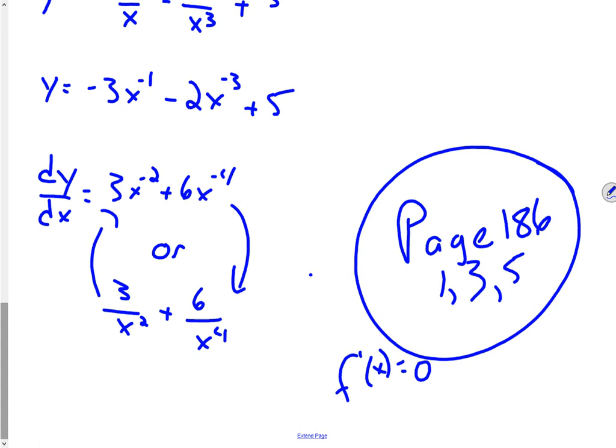On page 186, do number 1, 3, and 5. Number 5 is a great question — it says: find the coordinates of the points, if any, at which the tangent line is horizontal. Remember, if you have a horizontal line, the slope equals zero. So you take the derivative, set f prime equal to zero, and solve for the zeros. We're going to spend a lot of time on derivatives. You'll get another assignment next week, and we might even have a quick derivatives quiz, so I'm going to start hammering you guys with little things to keep you on track.